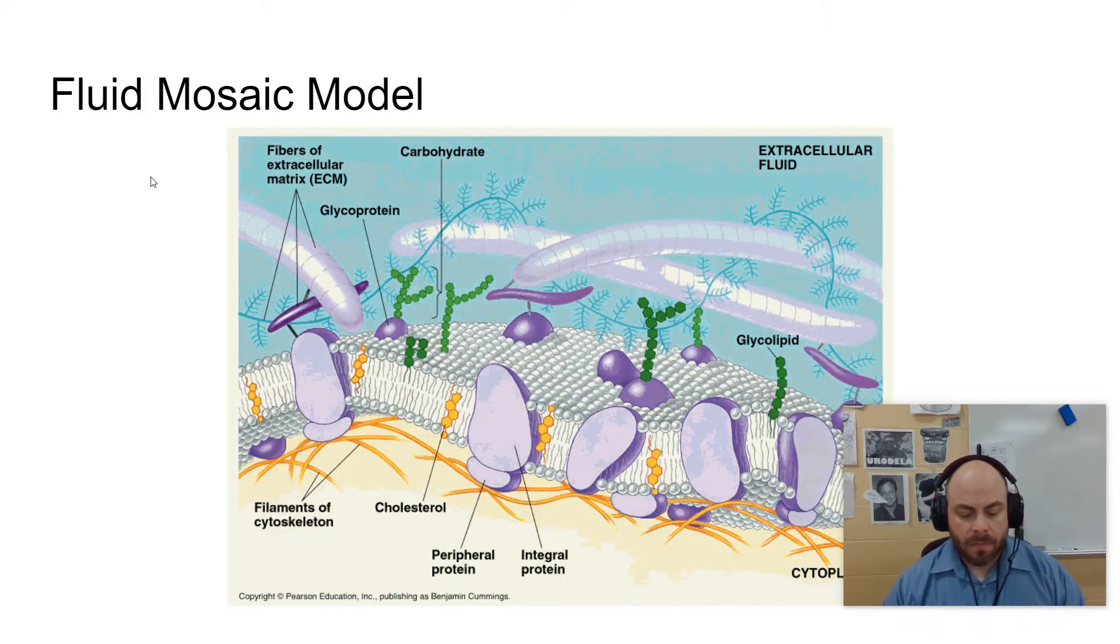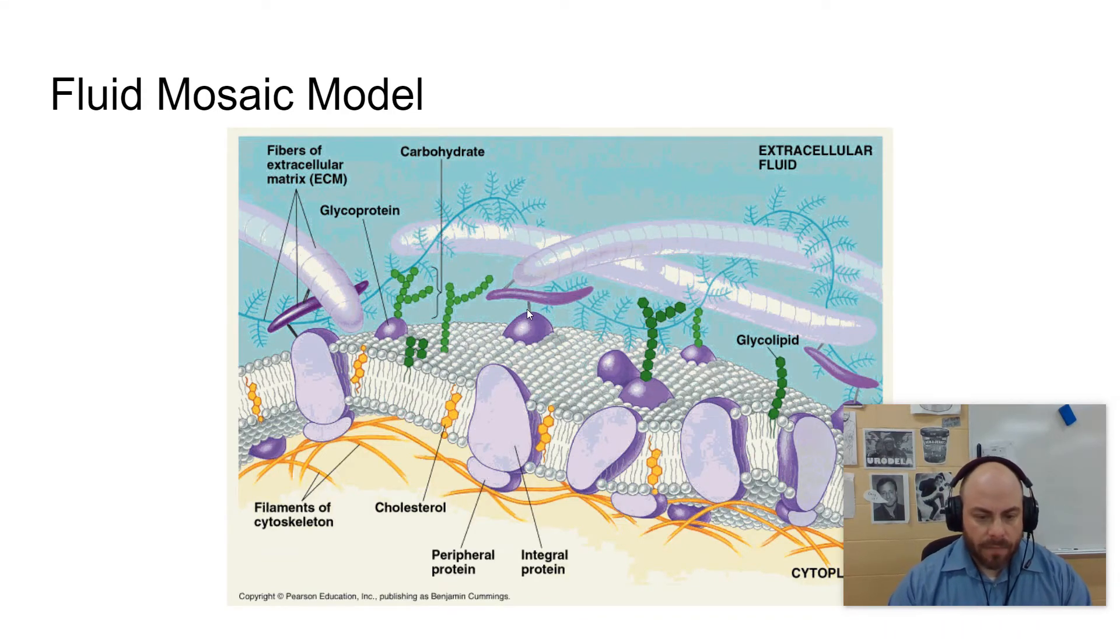So we talked about the fluid mosaic model, we talked about how a bilayer will spontaneously form in the presence of water because the phospholipids have a hydrophilic portion, which is these heads, and the hydrophobic portion, which are these tiny little tails here. And when you put them in water, the hydrophobic portions will get close to one another, and then the hydrophilic portions will get close to the water. And so they form this kind of bilayer here.